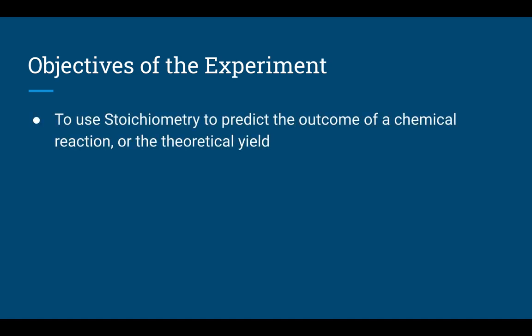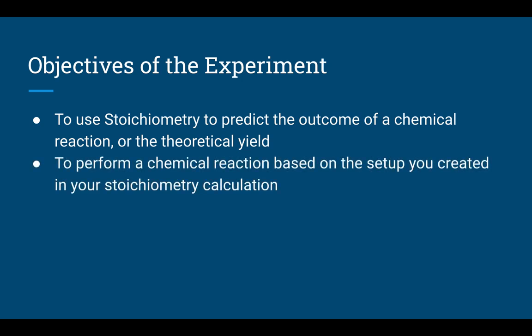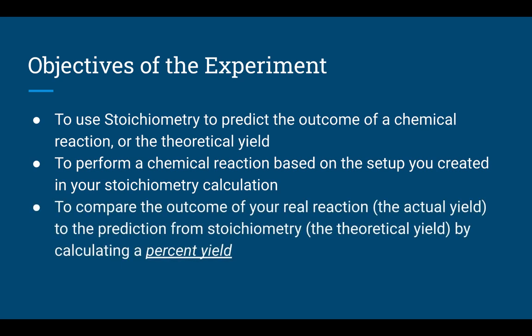Let's go through the objectives of the experiment. First, our job is to use stoichiometry to predict the outcome of a chemical reaction — the theoretical yield. This is the sole purpose of stoichiometry, and I think it's important to use it for its intended goal at least once. We'll then perform the actual chemical reaction and compare the actual yield to the theoretical yield by calculating percent yield, creating a tangible experience for what stoichiometry accomplishes in chemistry.